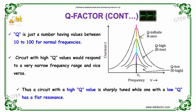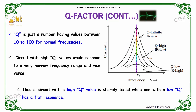Q is a dimensionless number with a value typically between 10 and 100 for normal frequencies. The circuit with the highest Q value responds to a very narrow frequency range, and vice versa. A circuit with a very high Q value is sharply tuned, while a circuit with a low Q value will have a flat resonance.